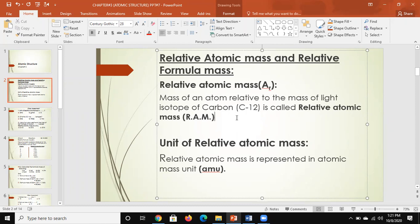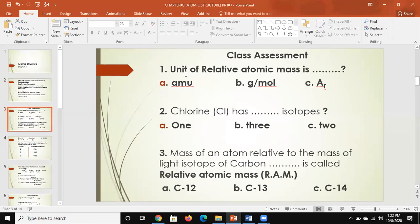Unit of relative atomic mass means how we can measure this. We can say relative atomic mass is represented in atomic mass unit (amu). This is important, boys, you have to memorize it. AMU - atomic mass unit - is the unit of relative atomic mass.